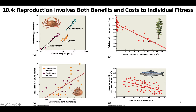Now here are some costs to individual fitness of reproduction. This graph shows data from fir trees looking at tree growth compared to the number of cones produced every year — a really strong correlation showing that if a tree invests a lot of energy into producing cones and seeds, that's less energy it can allocate to growing that year. If a tree invests a lot in its own growth, it produces many fewer cones.